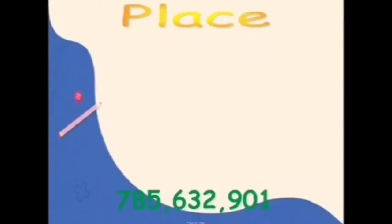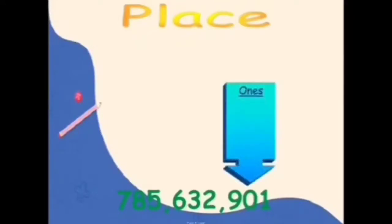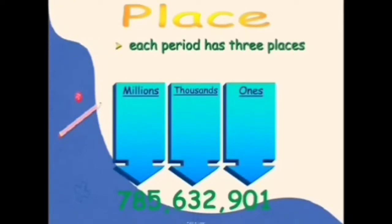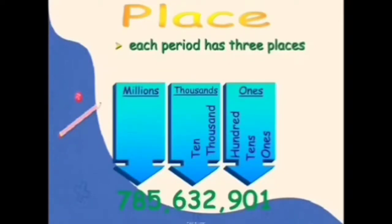Now let us start with place. Below you will see digits separated with commas, because they represent our periods. We have ones, thousands, and millions. Place can be found in the period, and each period has 3 places. In the ones period: ones, tens, hundreds. In the thousands period: thousands, ten thousands, hundred thousands. And in the millions period: millions, ten millions, and hundred millions.